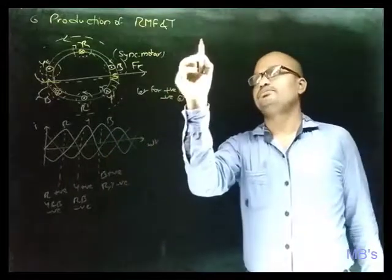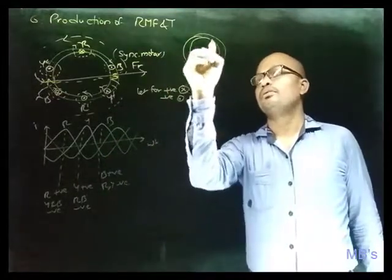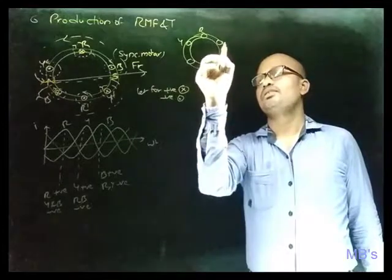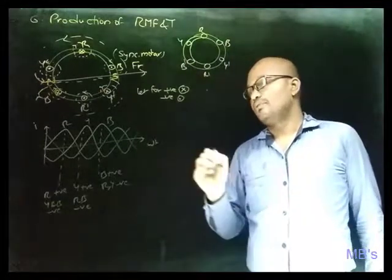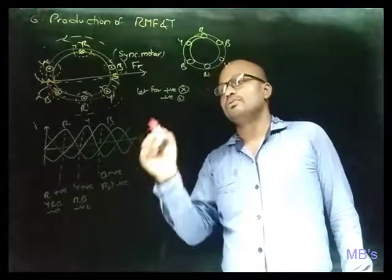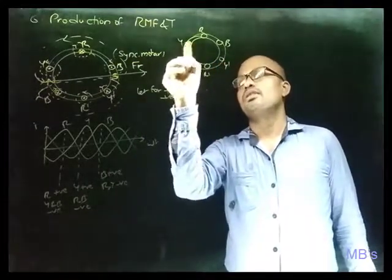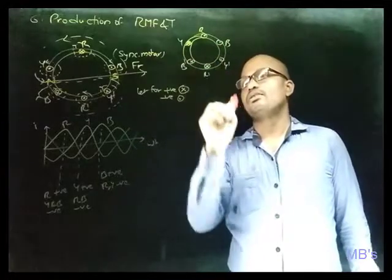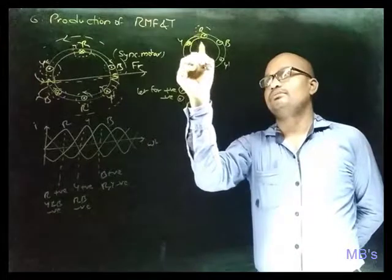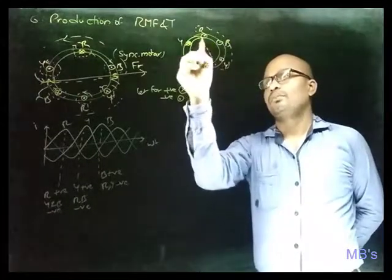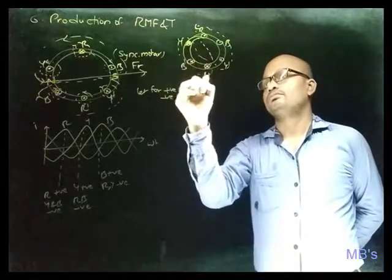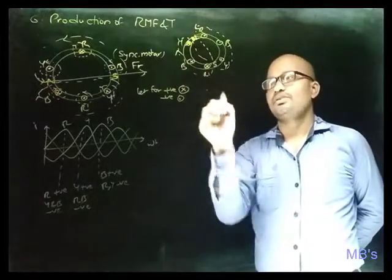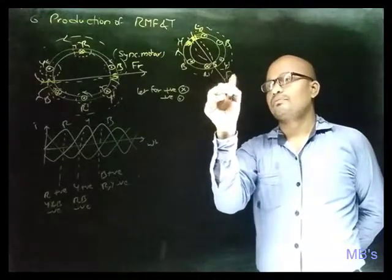Now consider the second instant. For the second instant: R, R dash, Y, Y dash, B, B dash. Y is positive and R and B are negative. Y positive means cross; R, B and R dash are negative. R dash is cross, this is cross, and this is dot. The resultant field shows anticlockwise and clockwise directions, so this portion is acting as north pole and this portion is acting as south pole. The resultant field FR is in this direction.